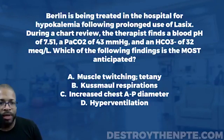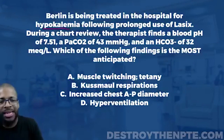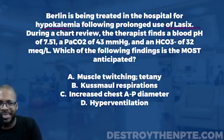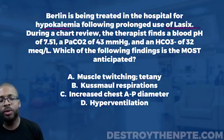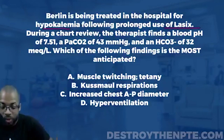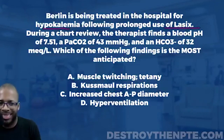Let's slow up first and understand the medical terminology. Hypo means below or decreased, kal is short for potassium, and emia means blood — so hypokalemia is low blood potassium. Now, Lasix, also known as furosemide, is a loop diuretic. It's a potassium-wasting diuretic, meaning potassium is being filtered and excreted out of the body, which can produce hypokalemia. So it makes sense that this patient has hypokalemia from prolonged Lasix use.